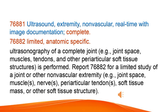Ultrasound, extremity, non-vascular, real-time with image documentation, complete or limited, anatomic-specific. Ultrasonography of a complete joint — e.g., joint space, muscles, tendons, and other periarticular soft tissue structures — is performed. Report 76882 for a limited study of a joint or other non-vascular extremity, e.g., joint space, muscles, nerves, periarticular tendons, soft tissue mass, or other soft tissue structure.